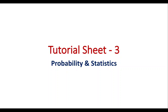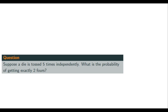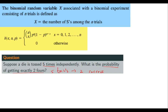Good morning everyone. Today we are going to cover some discrete random variables and then discuss some questions based on those distributions. To begin with, let us consider a question which says that a die is tossed five times. What is the probability of getting exactly two fours? So you make five trials and out of five trials you are looking for two successes. This directly corresponds to binomial distribution.